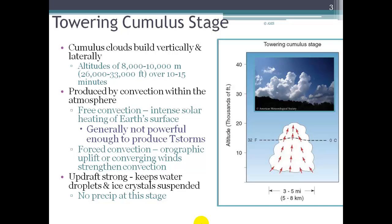The convection that drives thunderstorm growth is free convection, which is simply intense solar heating of the Earth's surface. The Earth warms up, warm air rises, causing updrafts and instability, and if there's moisture in the air, that will promote cloud growth. But free convection is generally not enough to produce thunderstorms, so we typically have some other type of convection at play. Forced convection includes orographic uplift — where topography like a mountain forces air to rise — and converging winds from a weather system.